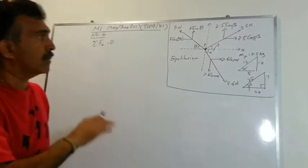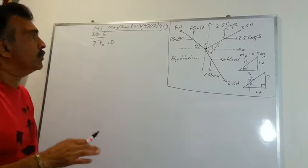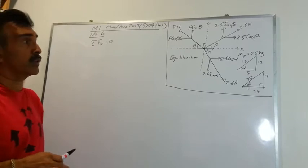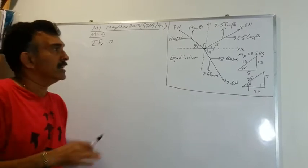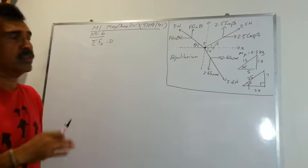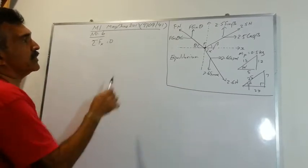So what have I done? I have resolved all the forces and now we should be able to write the summation of forces in the x direction equals 0, because in an equilibrium situation the resultant in any direction will be 0.